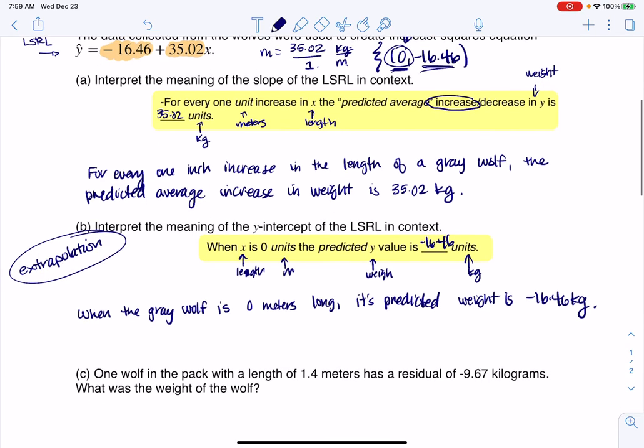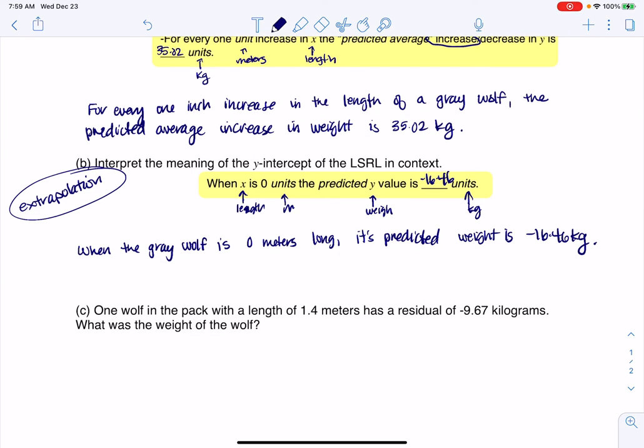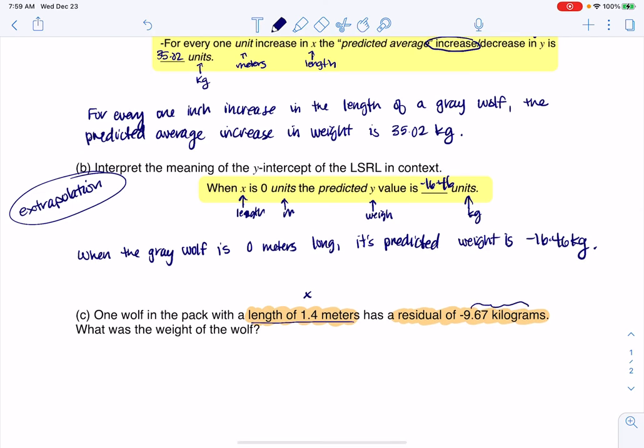The next problem is saying, we've got one wolf in our pack. It had a length of 1.4 meters. When I hear a length of 1.4 meters, I see that as an x variable. The units are lining up. And then it also tells me I had a residual of negative 9.67 kilograms. I noticed that these units, these are y units. When I say y units, we're talking about weight for this problem.